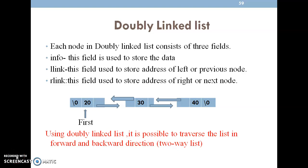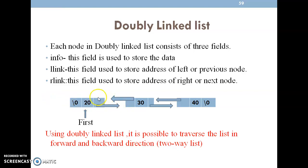Welcome to this video tutorial on the third module: doubly linked list. The name itself indicates that 'doubly' means it contains two links. Each node in a doubly linked list contains three fields: the item (information field), a left link, and a right link. The left link contains the address of the previous node and the right link contains the address of the next node. For the first node there is no previous node, so that is taken as null.